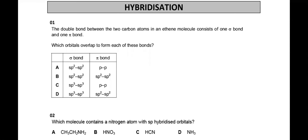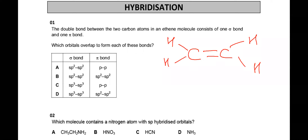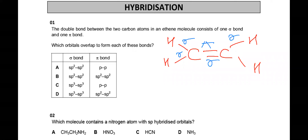Hybridization MCQ, question one: the double bond between the two carbon atoms in an ethene molecule consists of one sigma bond and one pi bond. Which orbitals overlap to form each of these bonds? This is why we work on this before we make the ethene molecule. Ethene molecule is C double bond C, and each carbon atom is forming a bond with hydrogen. Labeling all bond types: the C-C sigma and pi bond, and the remaining four bonds are all sigma bonds between carbon and hydrogen. So ethene molecule overall has five sigma and one pi bond.